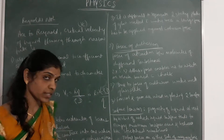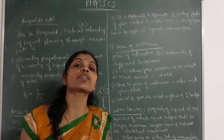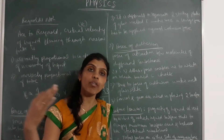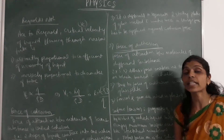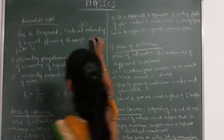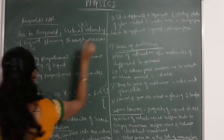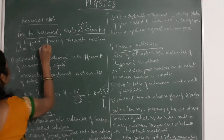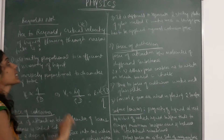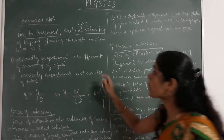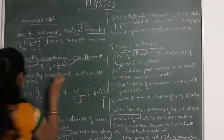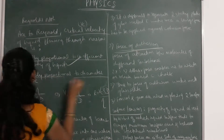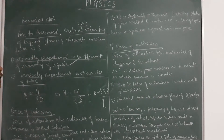We know how to represent Reynolds number mathematically, and based on that we are able to classify the flow of liquids. According to Reynolds, the critical velocity of a liquid flowing through a narrow tube is directly proportional to the coefficient of viscosity of the liquid, and inversely proportional to the diameter of the tube.